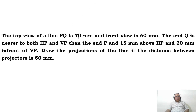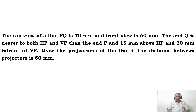He has given the front view and top view, and one end of the line is given. The important thing is that end Q is nearer to both HP and VP than end P. That means Q is nearer to, and P is away from, VP and HP. He has also given the distance between the end projectors.